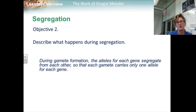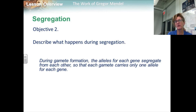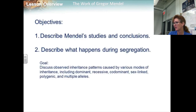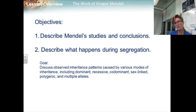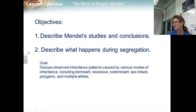Objective two: describe what happens during segregation. During gamete formation, the alleles for each gene segregate from each other so that each gamete carries only one allele for each gene. We will be practicing this in class. The first objective — describe Mendel's studies and conclusions — you should be able to do that, and we'll also work on describing segregation. Our overall goal was to discuss observed inheritance patterns caused by various modes of inheritance, including dominant, recessive, co-dominant, sex-linked, polygenetic, and multiple alleles. These objectives support the beginnings of that goal.